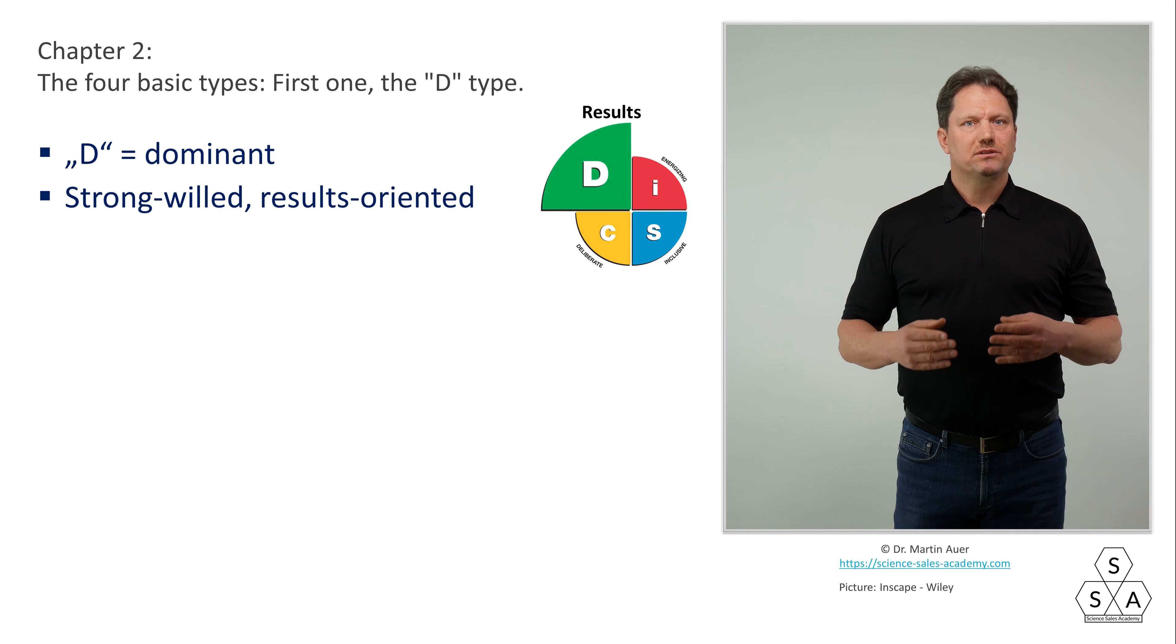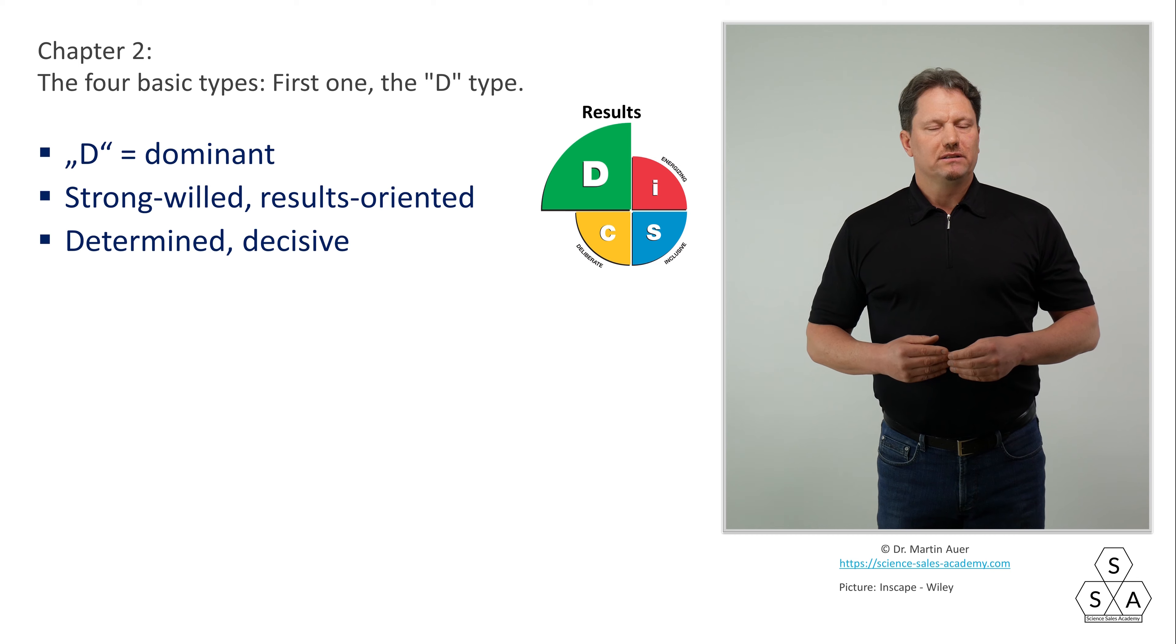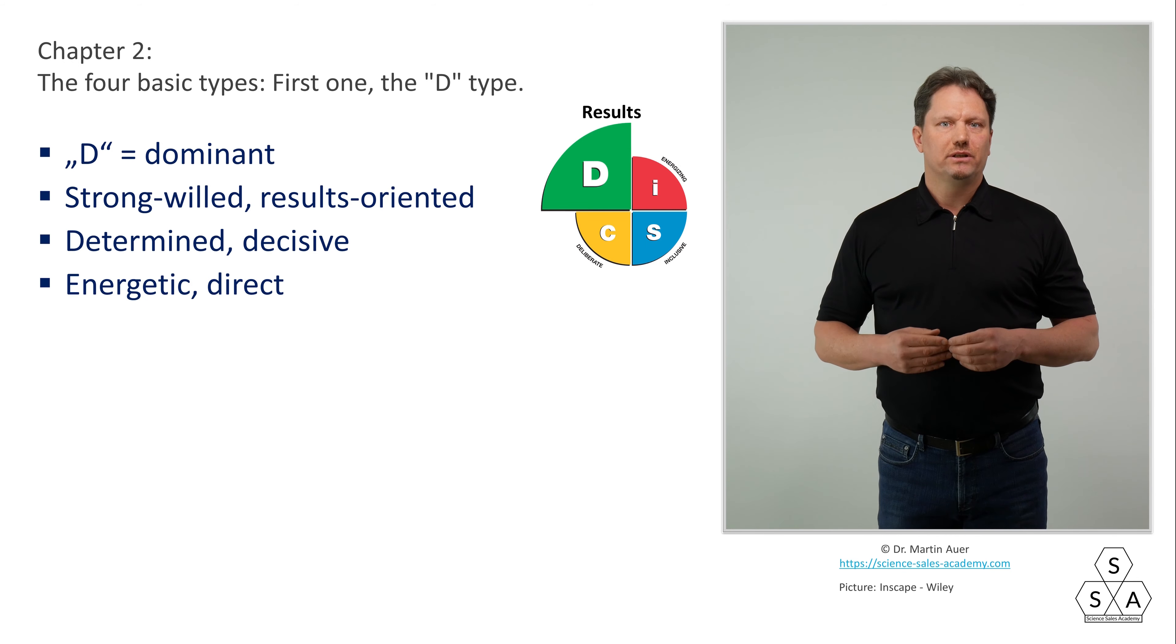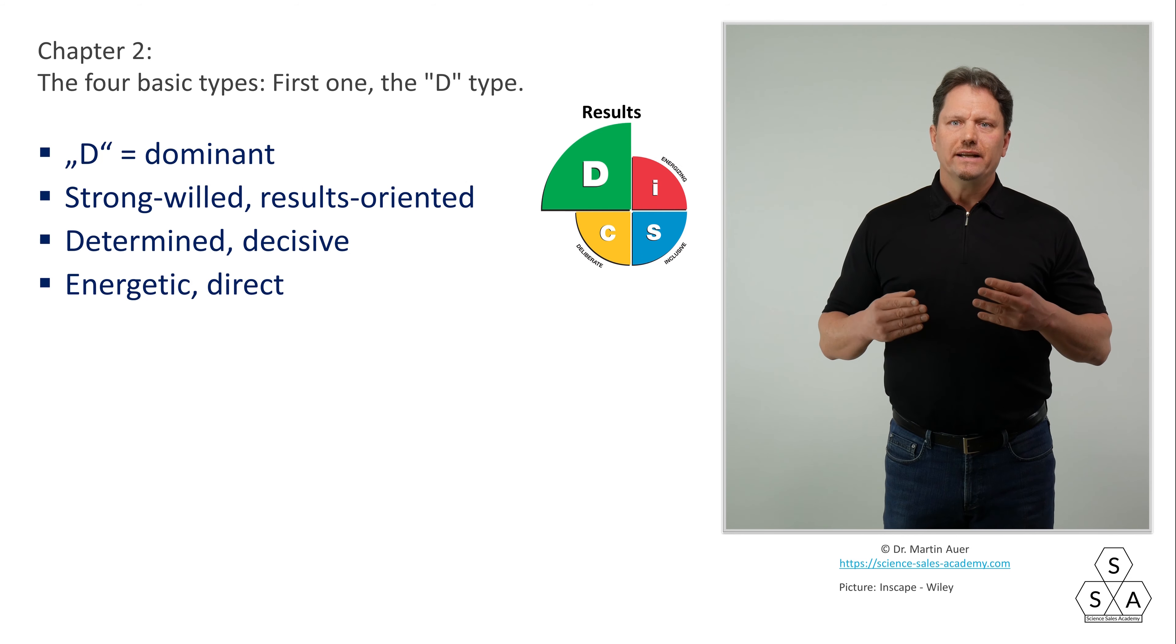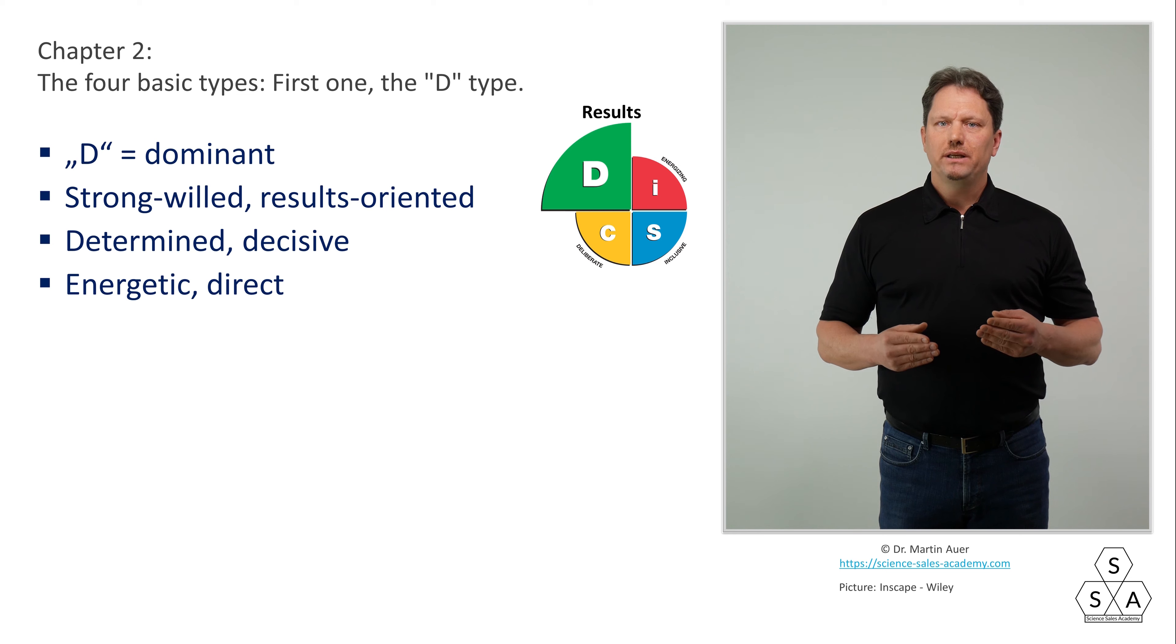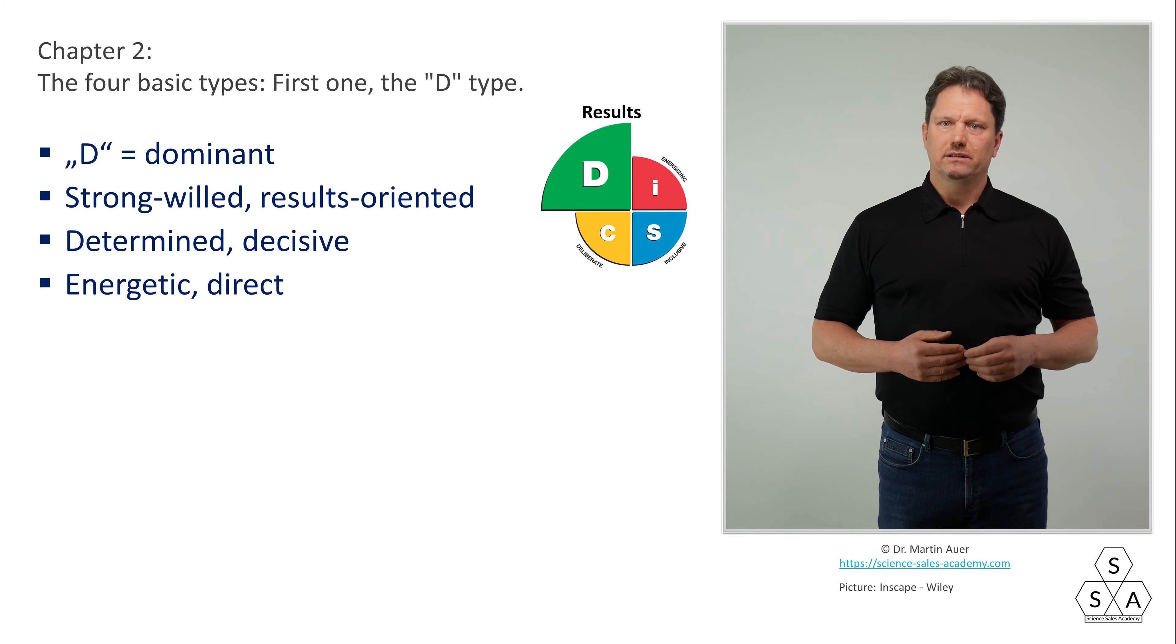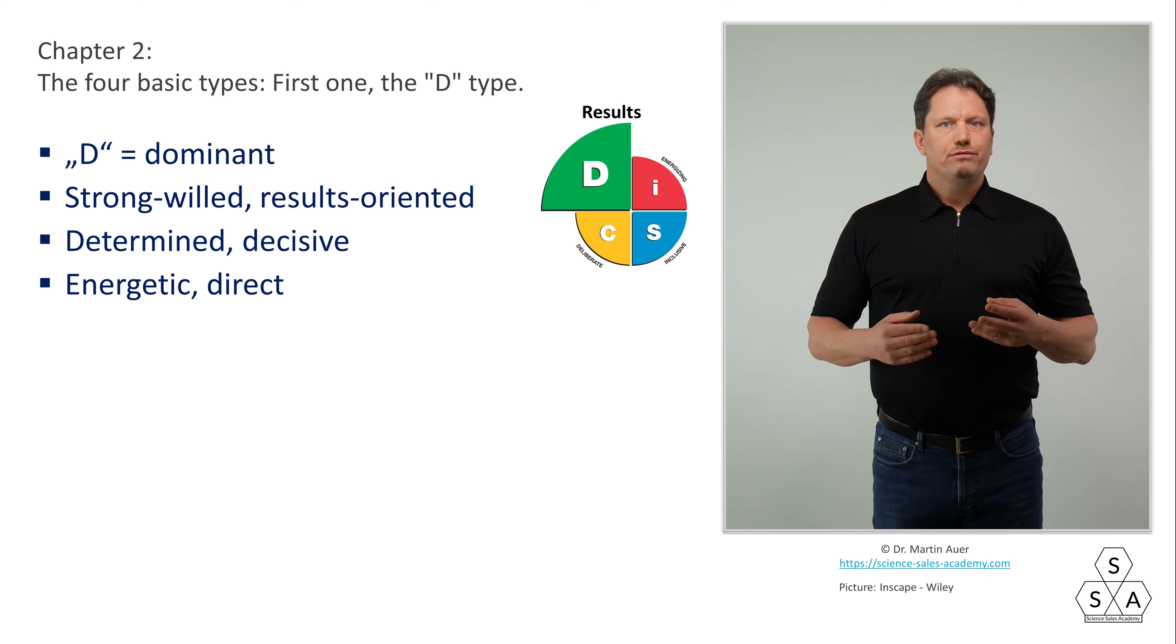In any case, D-types are strong-willed, results-oriented, determined and decisive, energetic and usually very direct in their communication and behavior. Without further ado, they come to the point. They are not afraid to say exactly what they think and mean, often without regard to personal and individual sensitivities. This is not necessarily meant evil or aggressive, and in most cases it is not.